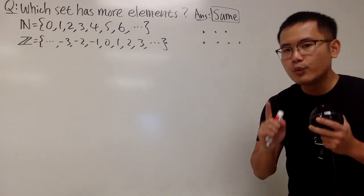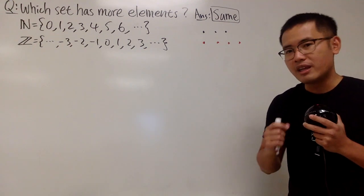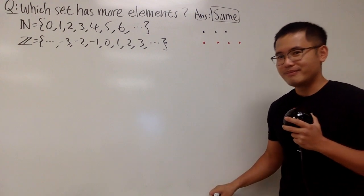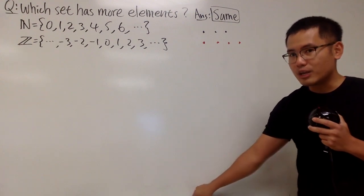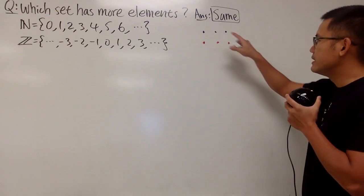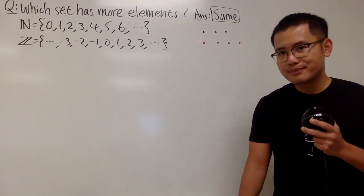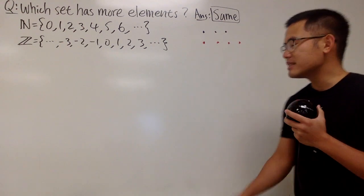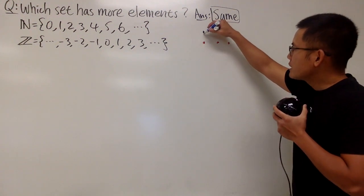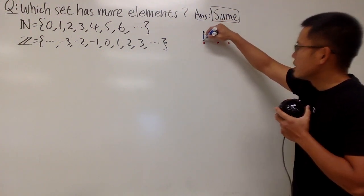But what if we cannot count, we cannot use numbers? In that case, how can you convince anyone that we do have more red dots than black dots? Well, here's a proposal for you guys. Check this out. Can we just connect the first black dot and then the first red dot like this?